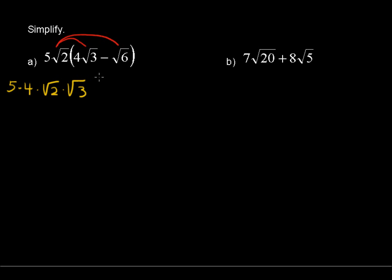We'll come back to simplifying that. We also have a positive times a negative, so that's going to be negative right away. And we have 5 times √2 times √6.